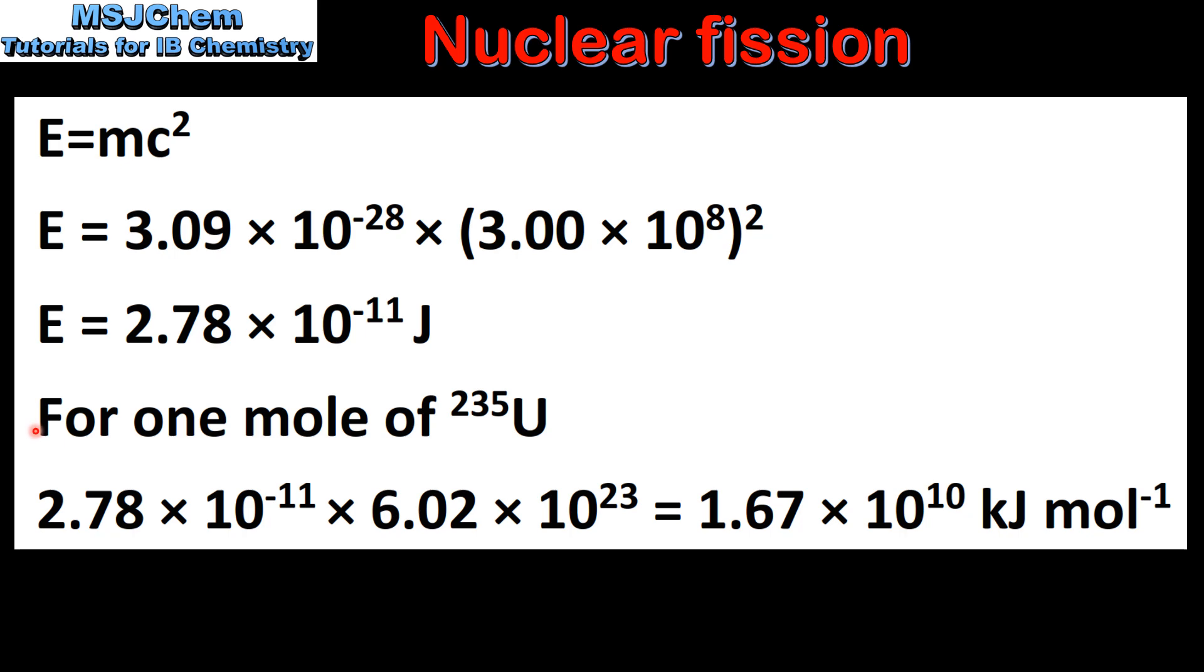For one mole of uranium-235 we multiply the value for one atom by the Avogadro constant to give us 1.67 times 10 to the 10 kilojoules per mole.